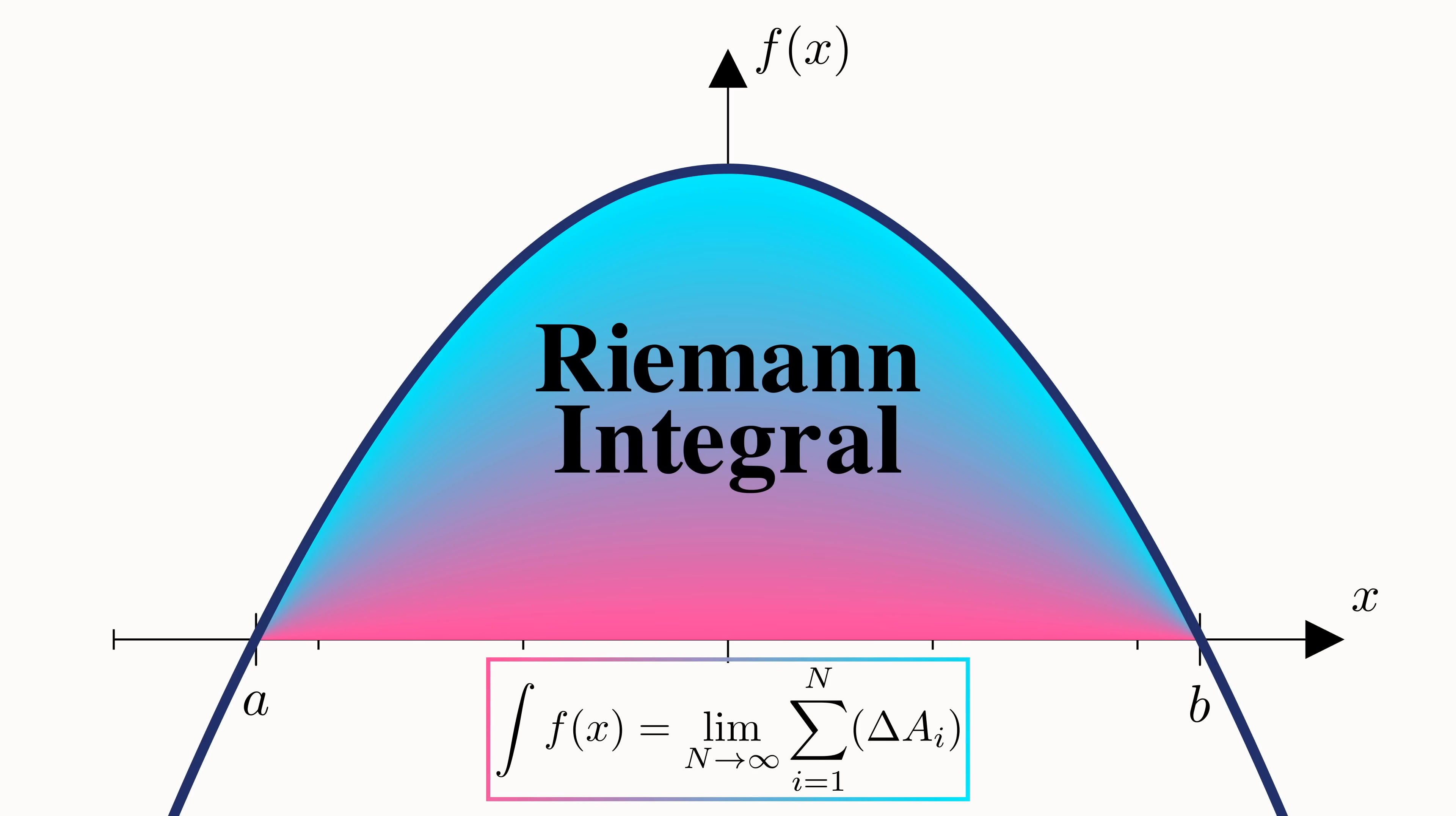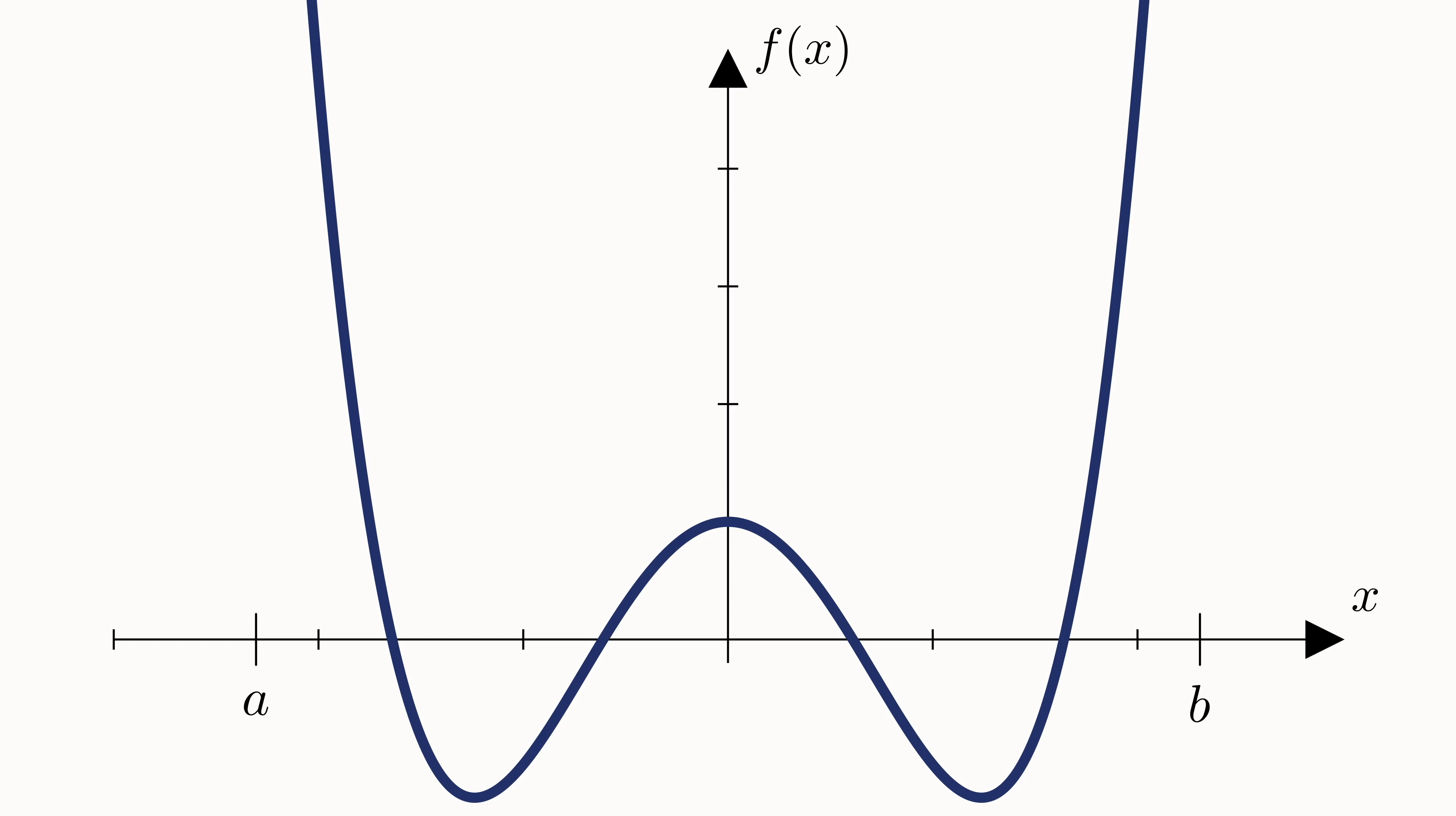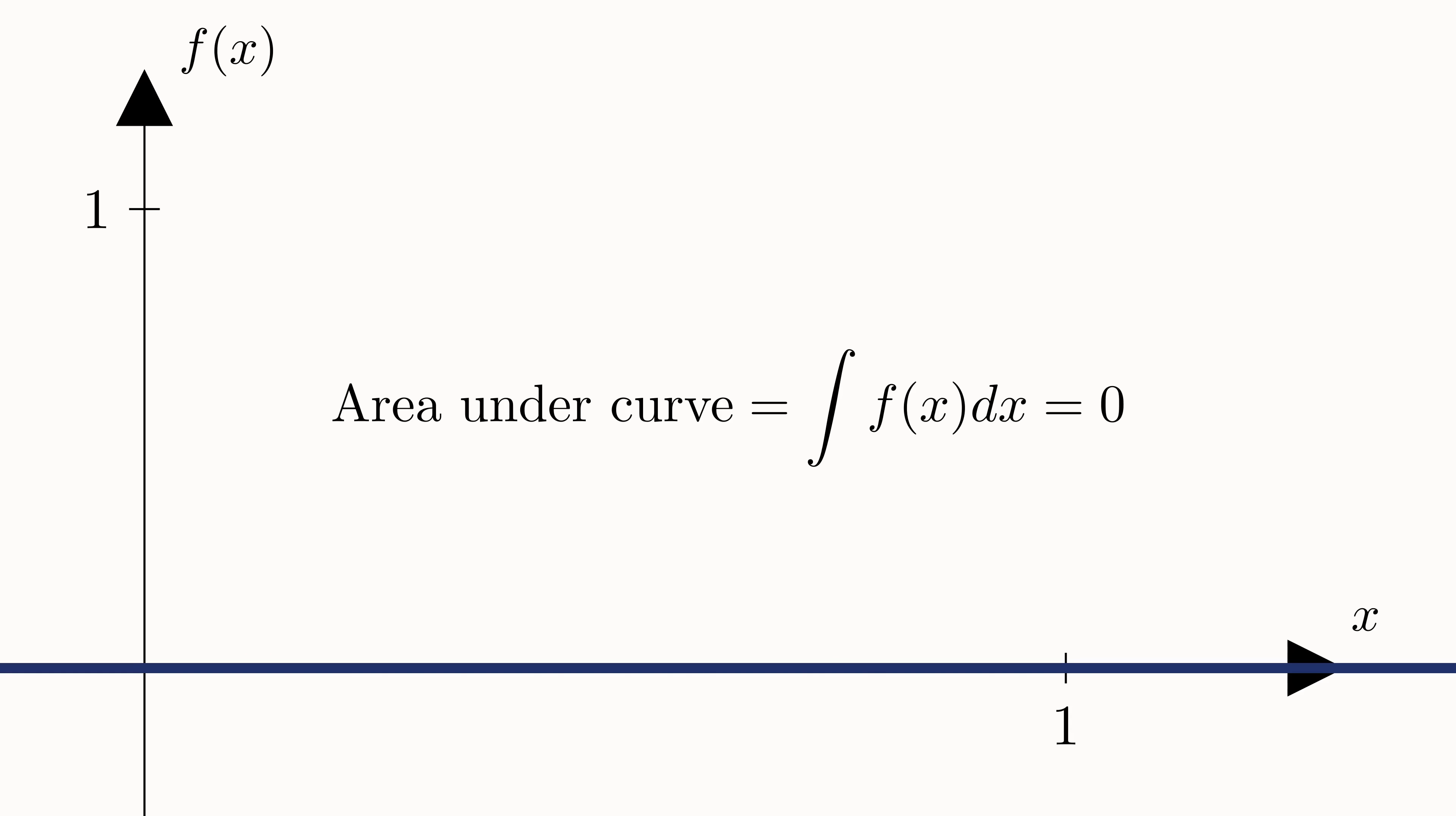This method worked incredibly well for a large class of functions, namely all functions that are continuous. But something strange happens when you consider a specific sequence of functions that are all Riemann integrable. We'll start with the function defined by f(x) equals zero everywhere. This function is clearly integrable, and the area under it is just zero.